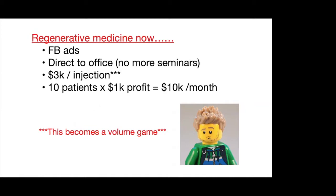That can depend widely based on the patient's plan, whether or not that plan covers regenerative medicine, whether you're doing it through Medicare or private insurance, and how many CCs of amniotic tissue you're using — so that number will go up and down. If you're paying about $2,000 for the actual product, you're getting about $1,000 in profit. So if you take ten patients at a thousand bucks profit per month, you're making about $10,000 in profit — compared to the earlier example of $35,000 per month.